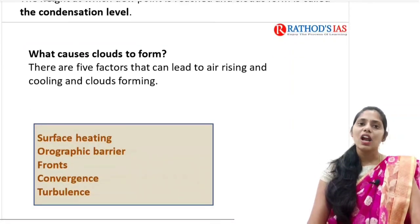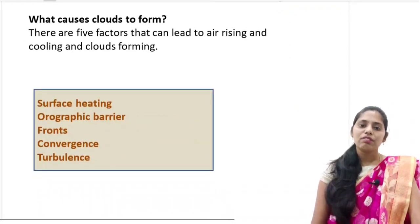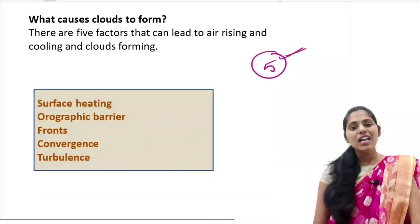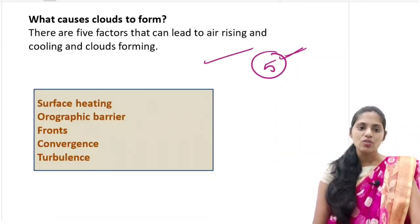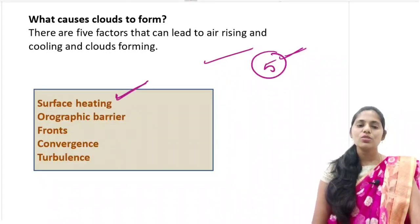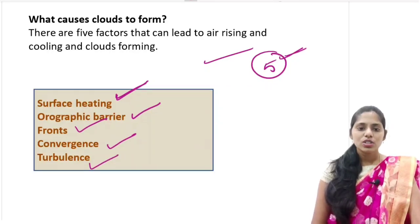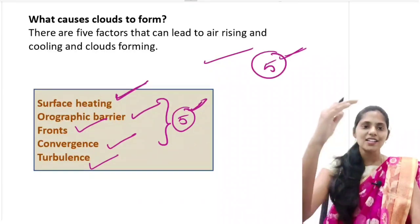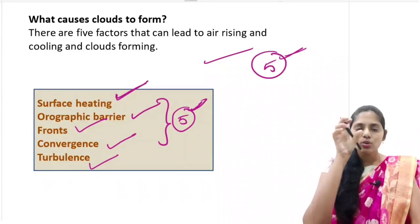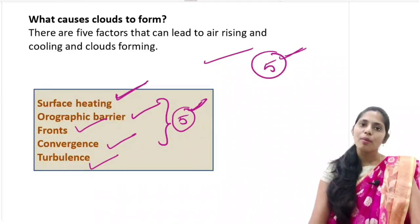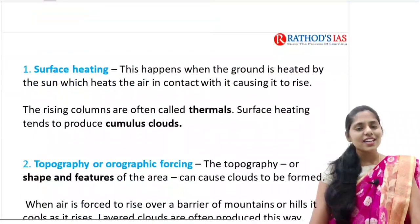What causes clouds to form? There are five important factors that lead to formation of clouds. The first one is surface heating, second is orographic barrier, third is fronts, fourth is convergence, and fifth is turbulence. These are the five important factors that lead air to rise and cool and finally form clouds.